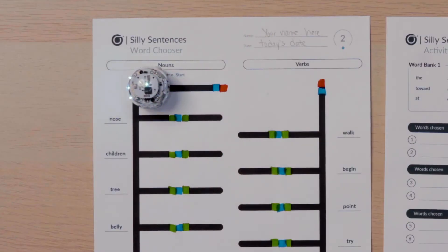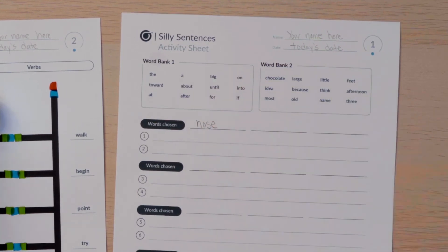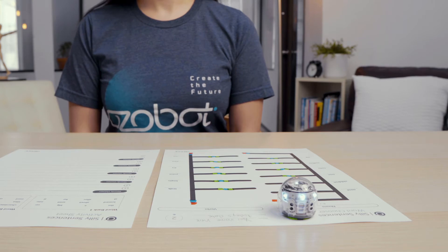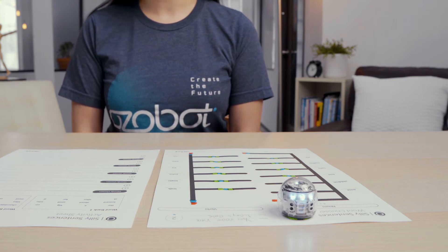When you place your bot on the map, it will randomly turn down one of the lines. Write the word that goes with the line on your activity sheet. Watch me. I'll place my bot on the map on one of the start positions and observe which row it turns down.